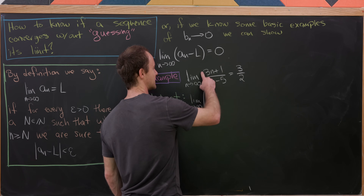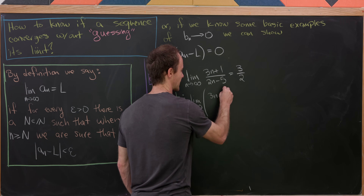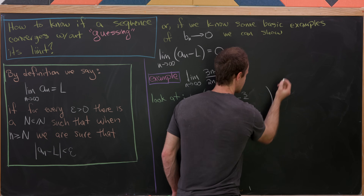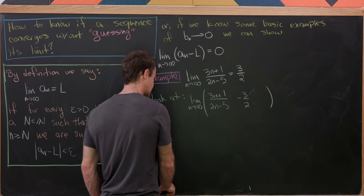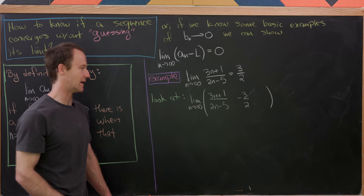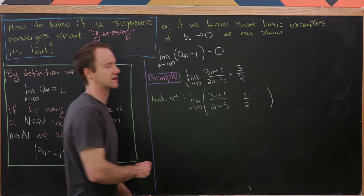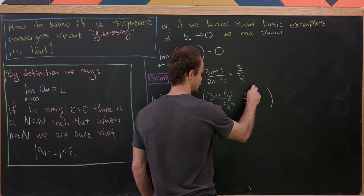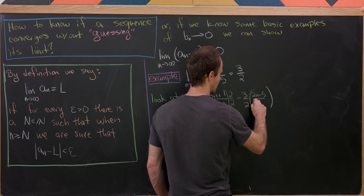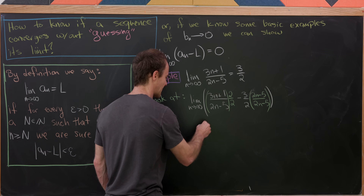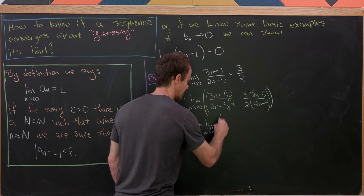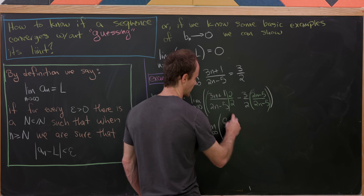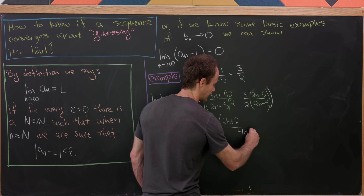Let's show that the limit as n goes to infinity of (3n + 1)/(2n − 5) is 3/2. I'll take that term and subtract the limiting value: (3n + 1)/(2n − 5) minus 3/2. I need a common denominator, which is just the product of the two denominators since they're relatively prime. So I'll multiply the first term by 2/2 and the second term by (2n − 5)/(2n − 5). That gives numerator 6n + 2, over denominator 4n − 10.